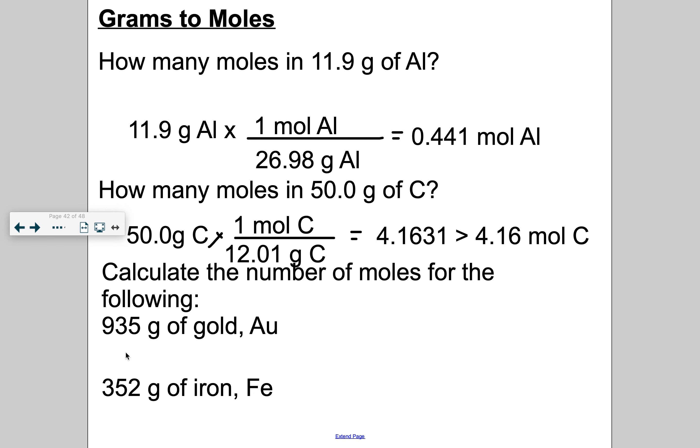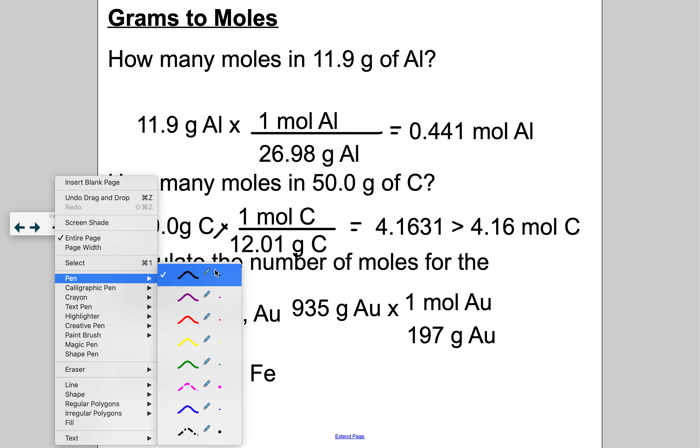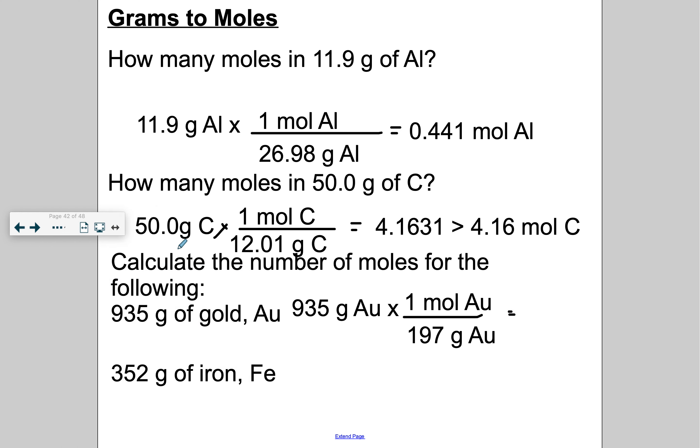Calculate the number of moles for 935 grams of gold. The molar mass of gold is 197. And we punch it in our calculator. 935 divided by 197, 4.746. And then we've got to go to three sig figs. So I can round. So I'm going to go 4.75 moles of gold. So I hope you caught that how I rounded.